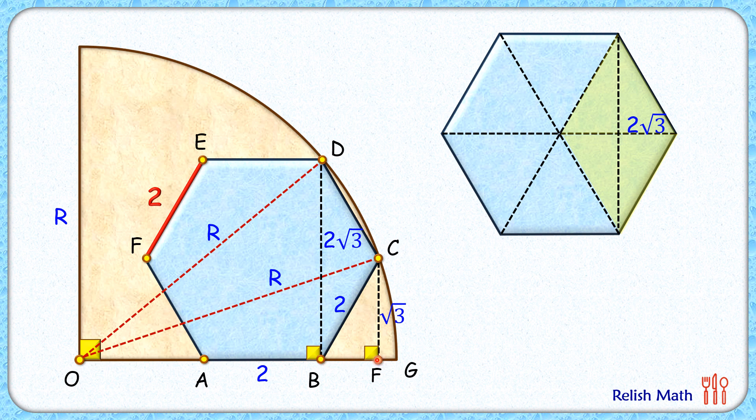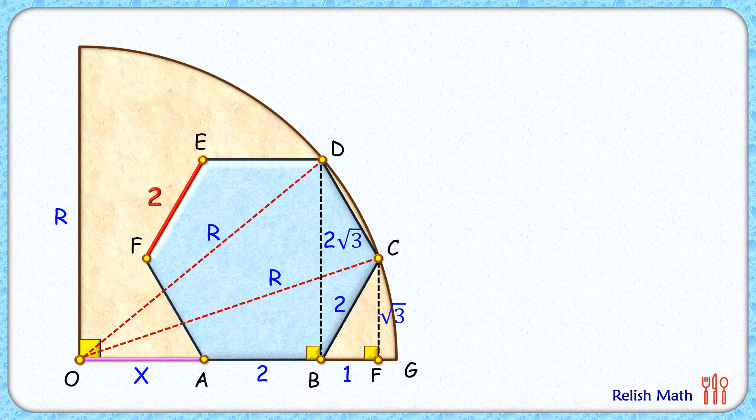Let's assume this length OA is x centimeters. Now let's consider the right angle triangle OFC. Here applying Pythagorean theorem, we will get (x+3)² + (√3)² = R².